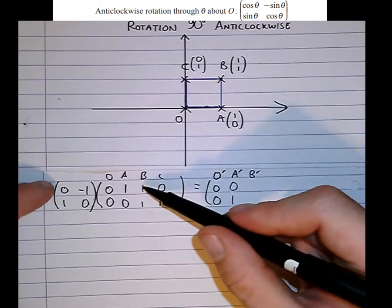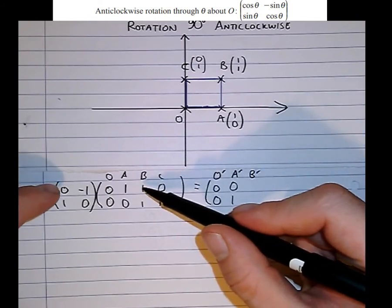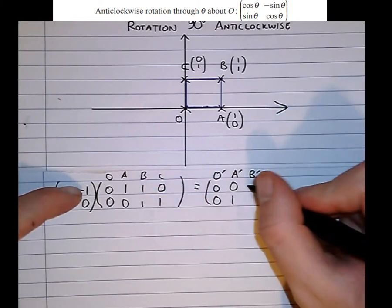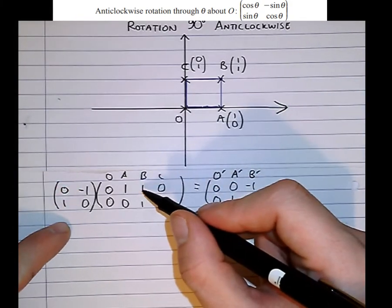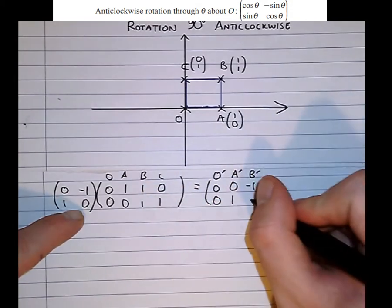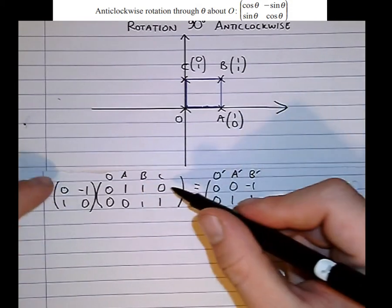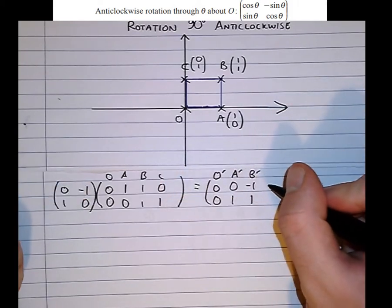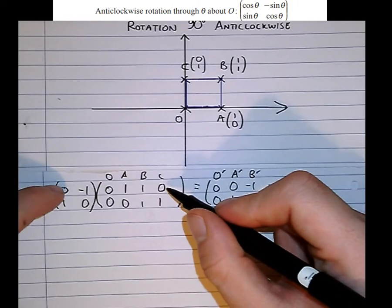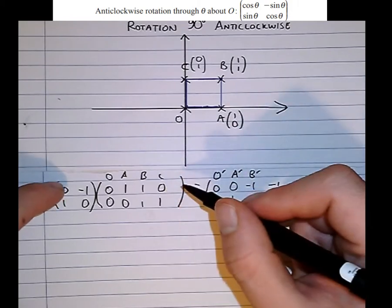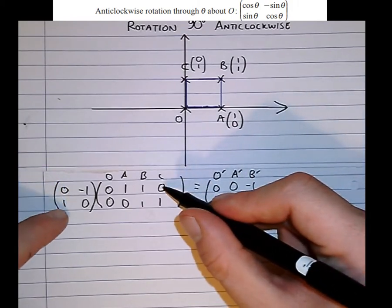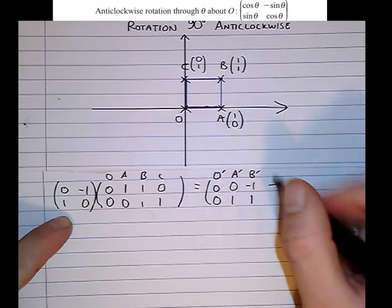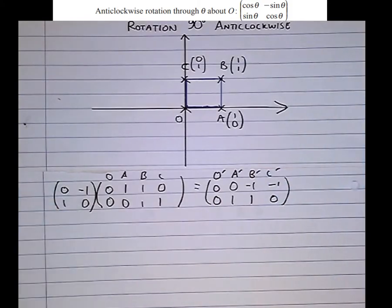B dash, let's have a look at the effect that this has on B now. 0 times 1 plus minus 1 times 1 is minus 1. 1 times 1 plus 0 times 1 is 1. And then 0 times 0 plus minus 1 times 1 is minus 1. 1 times 0 plus 0 times 1 is 0. And that's where C ends up.